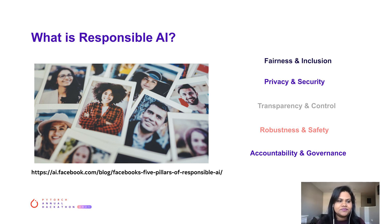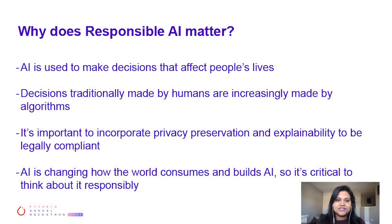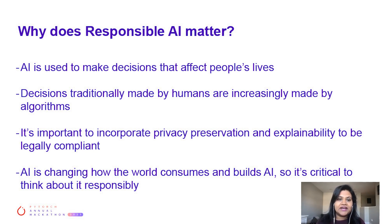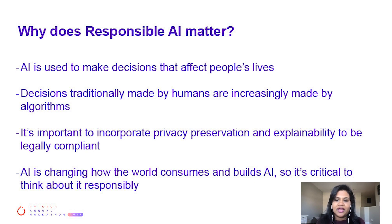But why does it matter? In the last decade, AI is increasingly used to make decisions that affect people's lives. We have seen several examples where decisions traditionally made by humans are now being made by algorithms — from helping determine who is hired or fired, who is granted a loan, or how long an individual spends in prison. These decisions are non-trivial and have a consequential impact on the world and the lives of people. New legislation such as GDPR and the California Consumer Privacy Act mandates products and experiences to incorporate privacy preservation and explainability to be legally compliant — these are no longer considered nice-to-haves. It's changing how the world consumes and builds AI, making this a critical direction for PyTorch as well.